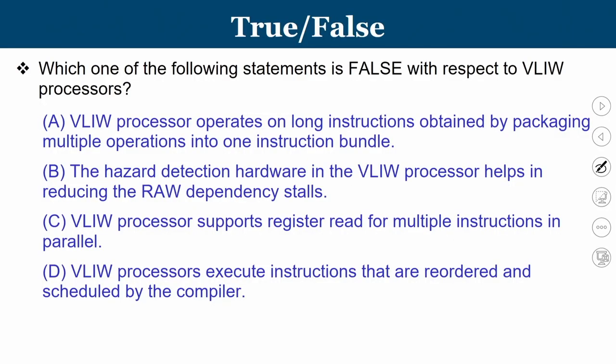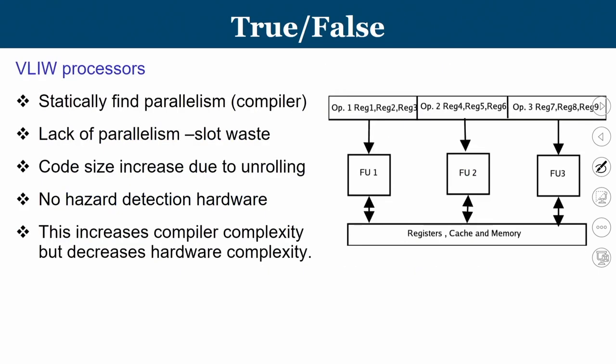The second question is about VLIW processors. Which one of the following statements is false with respect to VLIW processors? VLIW stands for Very Long Instruction Word. The four statements given are: (A) VLIW processor operates on long instructions obtained by packaging multiple operations into one instruction bundle; (B) the hazard detection hardware in VLIW processor helps in reducing RAW dependency stalls; (C) VLIW processor supports register read for multiple instructions in parallel; and (D) VLIW processor executes instructions that are reordered and scheduled by the compiler.